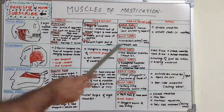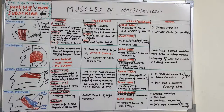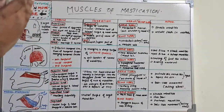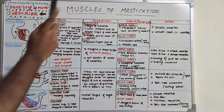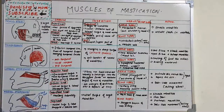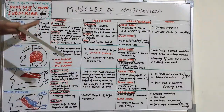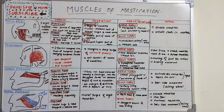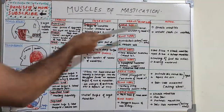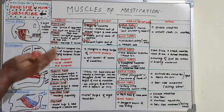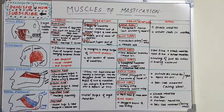The nerve supply of masseter is by the masseteric nerve, which is from the anterior division of the mandibular nerve. Blood supply is by the masseteric artery, a branch of the maxillary artery, and venous drainage is by the masseteric vein. The action is to elevate the mandible and occlude the teeth during mastication.